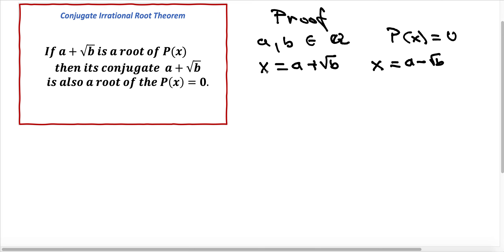So now, because these are solutions of the polynomial function p of x, we want to find the factors of this polynomial function. To find the factors, we make one side equal to 0.